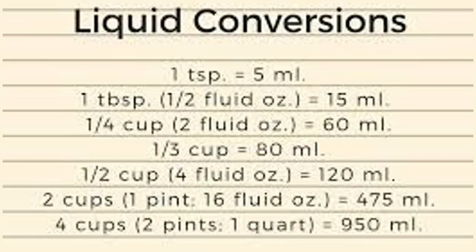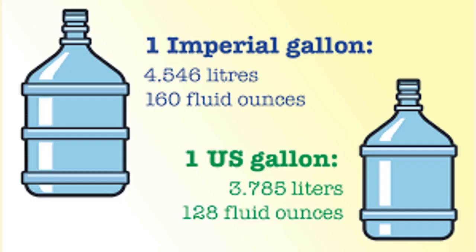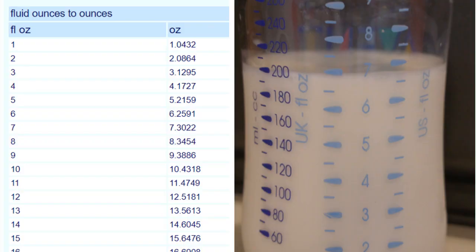If you are using a recipe written in cups and ounces, always verify the source of your recipe to determine if it has been written using the US or the imperial system of measurement. The difference in volume measurements can be quite noticeable when producing large quantities. As a rule of thumb, the imperial gallon, quart and pint are about 20% larger than the US fluid measurements, while the metric fluid ounce is about 4% smaller.